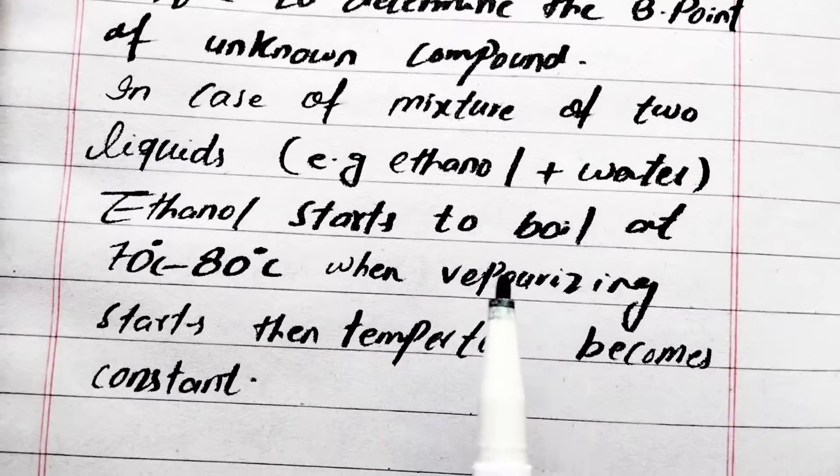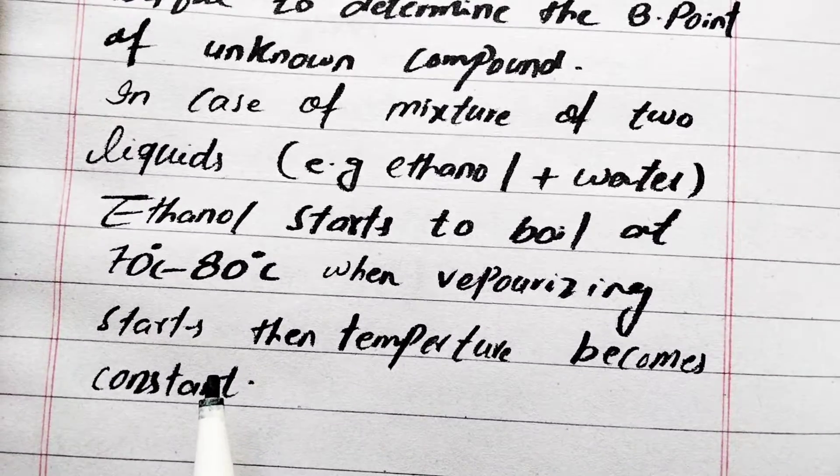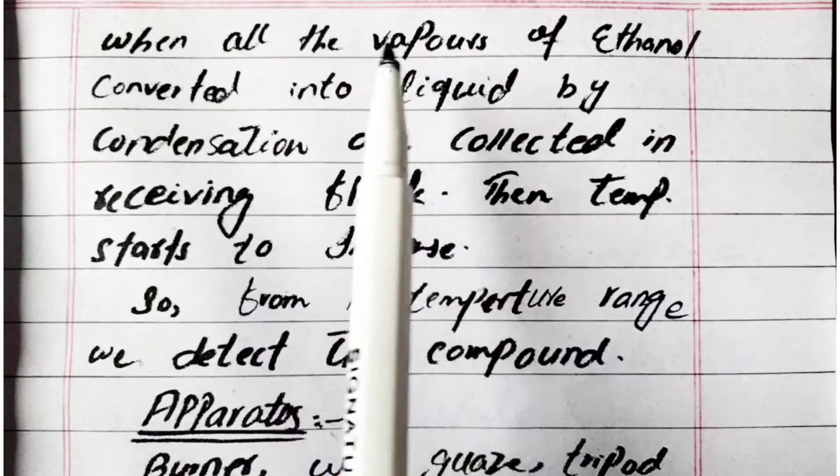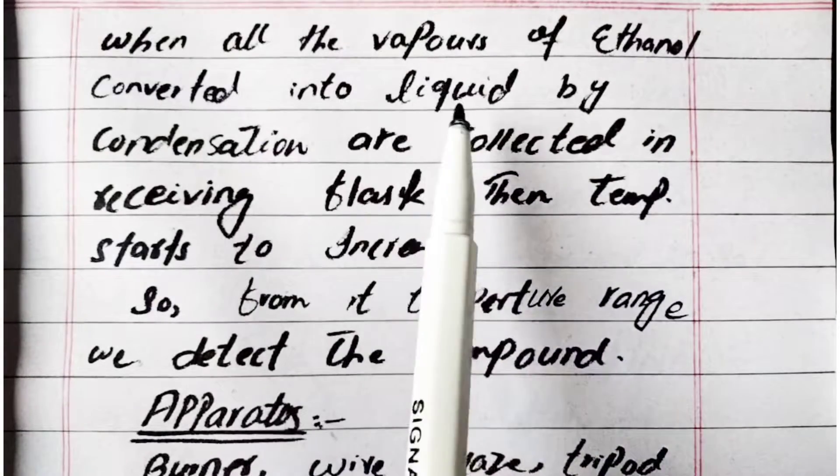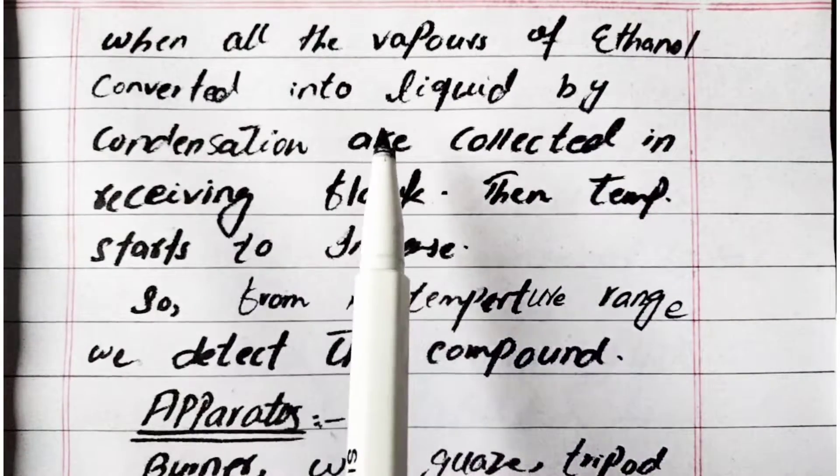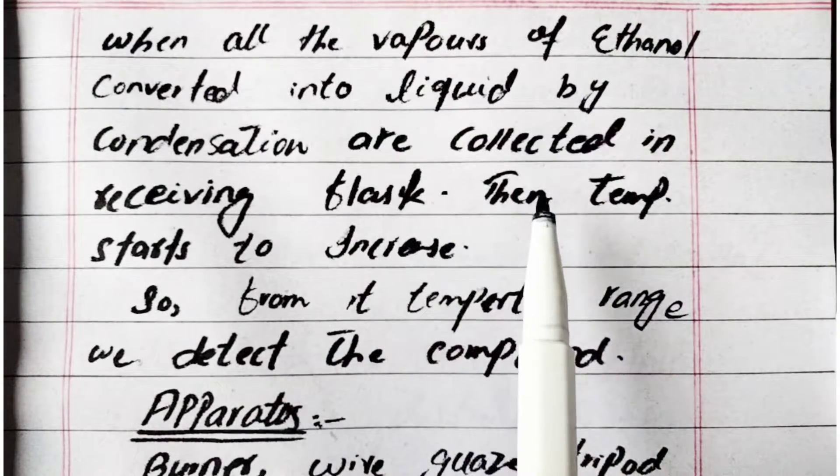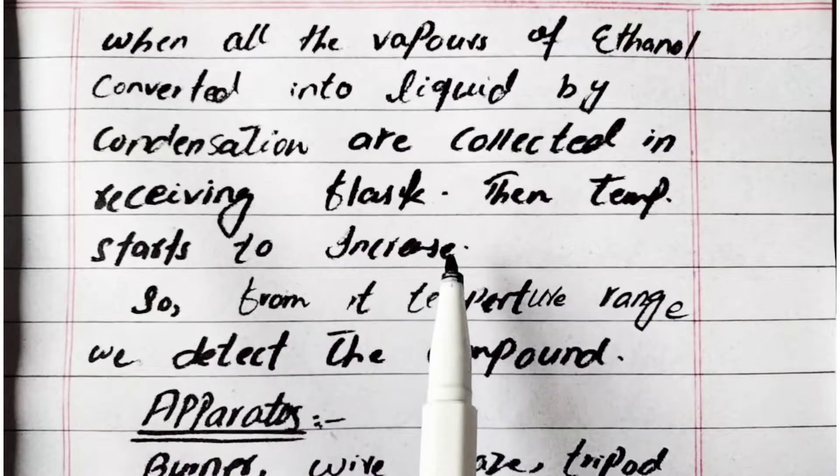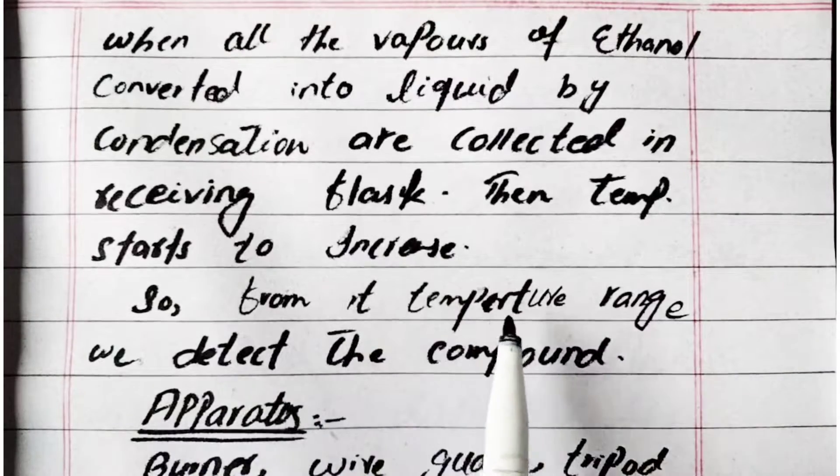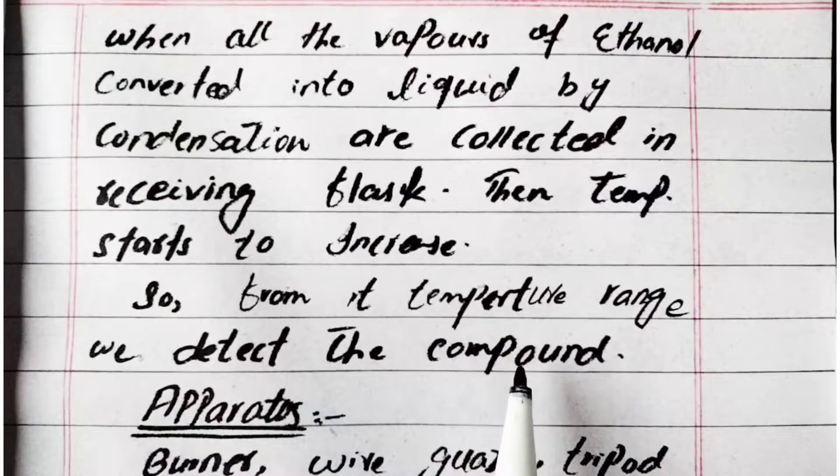When all the vapors of ethanol are converted into liquid by condensation, these vapors are collected in the receiving flask. The temperature starts to increase, so from its temperature range we detect the compound.